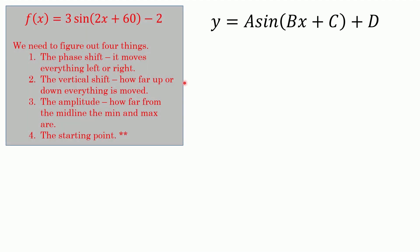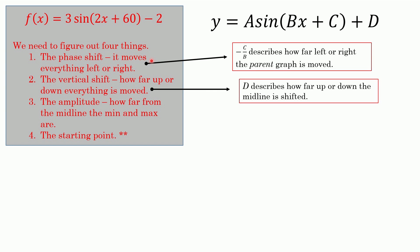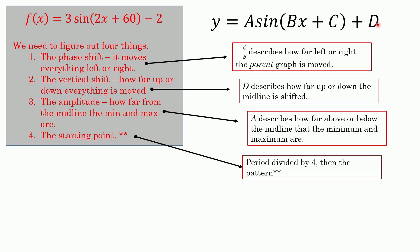Here's what we're going to do. We have basically four basic things. First thing we got to do is figure out how far left or right the whole thing goes, that's negative C over B. Then the really easy part is how far up or down does the whole graph move. The amplitude is how far up or down from here it goes. And then the tricky part is you have to move the starting point of the original graph and then divide the period by four. I'll show you step by step, you'll get it.